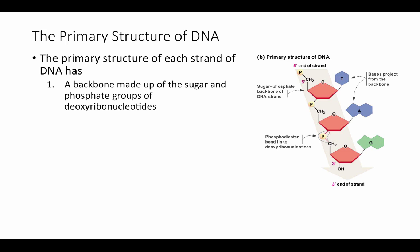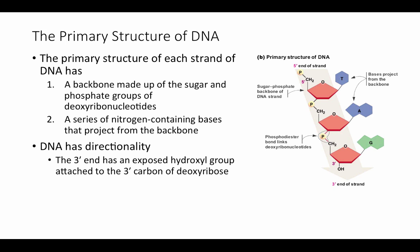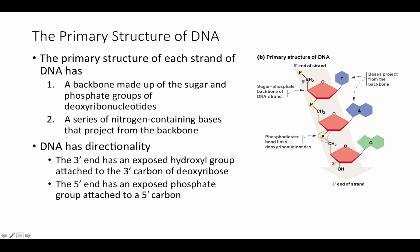Let's quickly review the primary structure of DNA, which will be important for understanding replication. The backbone consists of the sugar deoxyribose linked by phosphate groups, with nitrogen-containing bases A, T, G, and C attached to that backbone. DNA has directionality: the 3' end has an exposed hydroxyl group on the 3' carbon, and the 5' end has an exposed phosphate group on the 5' carbon. This directionality is crucial for understanding how DNA is replicated.